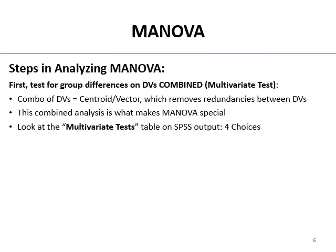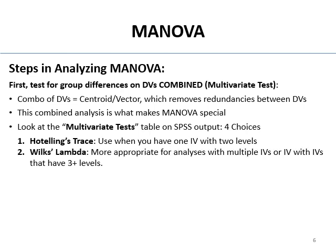There are four different lines in the multivariate test table in SPSS, and you've got to pick one. Hotelling's Trace is the row you use when you've got one IV with two levels — like voters and non-voters differing on civic obligation or patriotism. Another one is Wilks' Lambda, which you'd interpret if you had multiple independent variables or an IV with three or more levels.